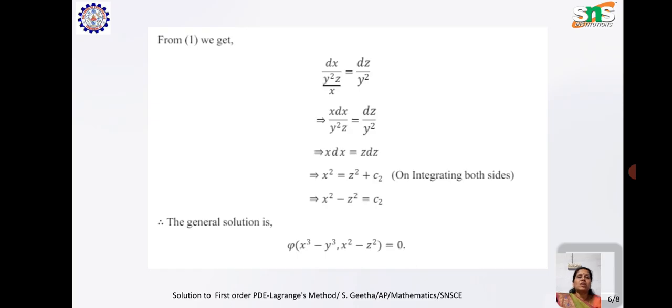Finally, the general solution is φ(c₁, c₂) = 0, that means φ(x³ - y³, x² - z²) = 0.